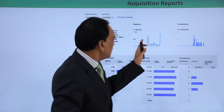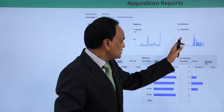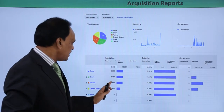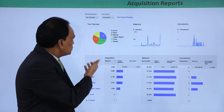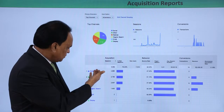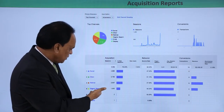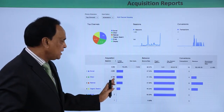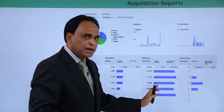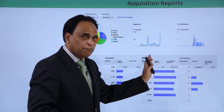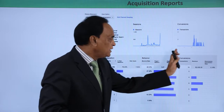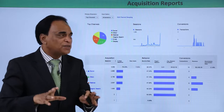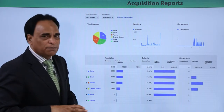Here you have the sessions by source of traffic, and the acquisition, behavior, and conversion breakdown. How people are behaving based on the top channels — social, direct, referral, organic, email, and paid campaigns. From these sources, acquisition is happening here — how many acquisitions, the behavioral pattern of users on the website, how many pages are being viewed, and the conversion data. The complete information can be captured based on the acquisition reports.